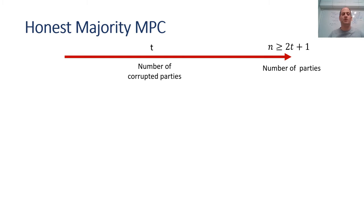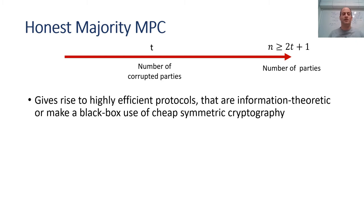In this work we consider the popular setting of multiparty computation with an honest majority. In this setting we have n parties who wish to jointly compute some functionality over their private inputs without revealing anything but the output, in the presence of t corrupted parties where n is larger than 2t. This setting is popular because it enables highly efficient protocols that are information-theoretic or only make black box use of cheap symmetric primitives.